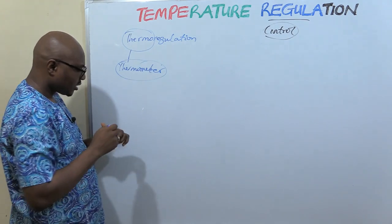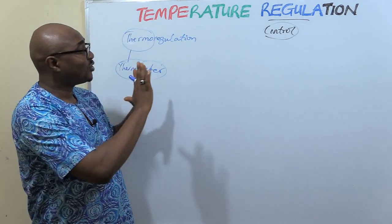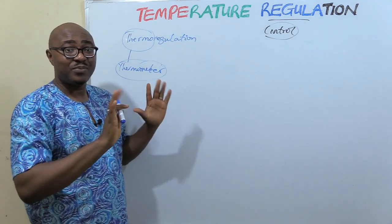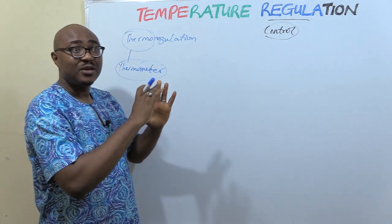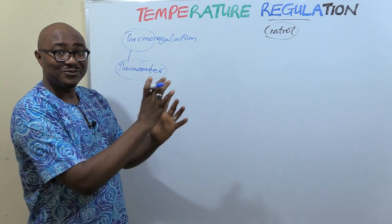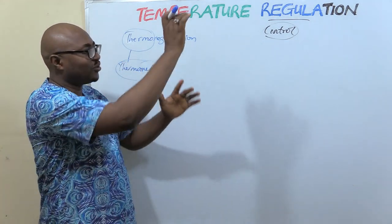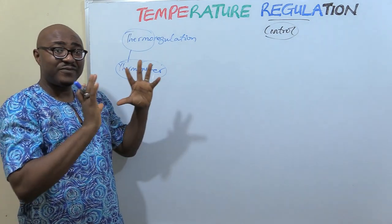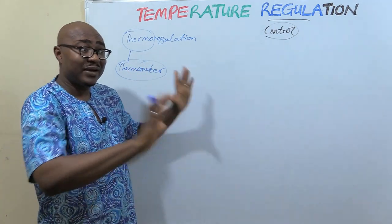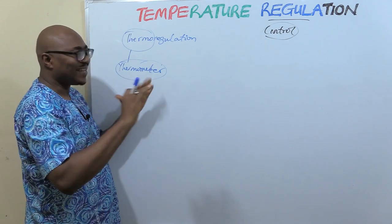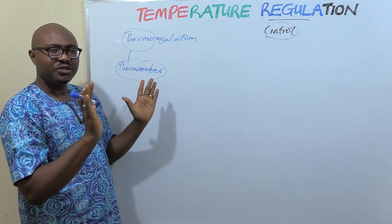Body temperature is a very classic example that will really make us understand control systems. We started with control systems and the different components — about five of them. Now I'm going to be using something very practical that we can all relate with: temperature regulation. The body wants to maintain temperature within a narrow range.